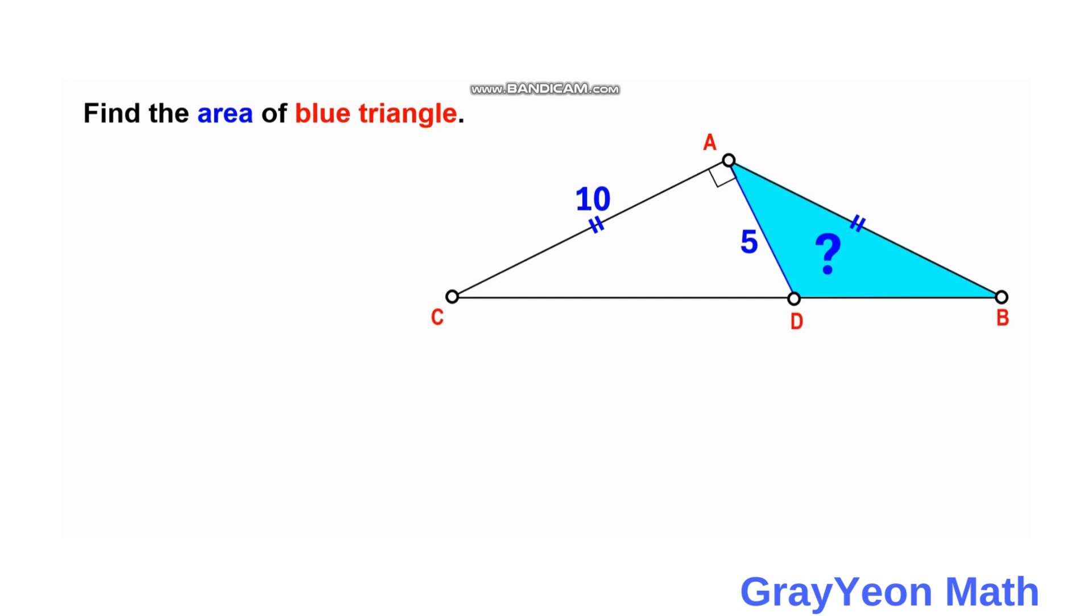First thing that we may do is we can actually draw a line, a vertical line from A to this segment CD, and it should be perpendicular. Notice that this is also a right triangle, same as this triangle ACD. So if we label, we can label this as E, this point.